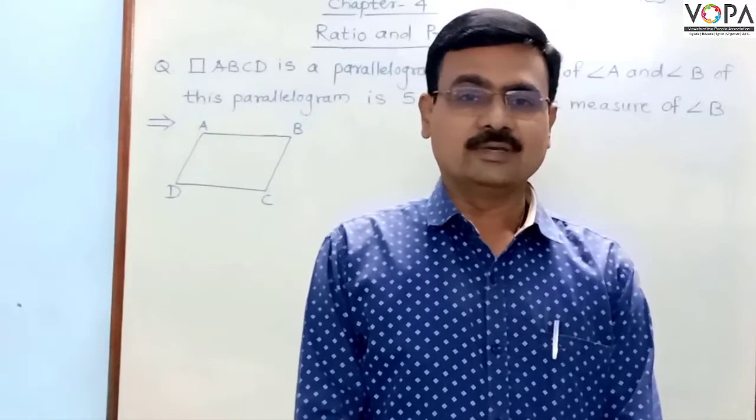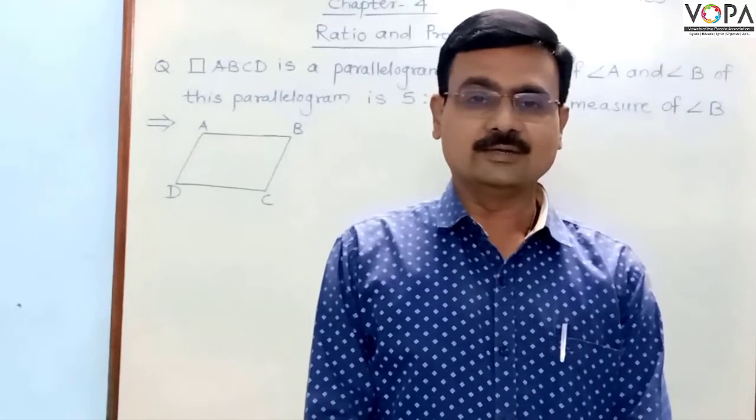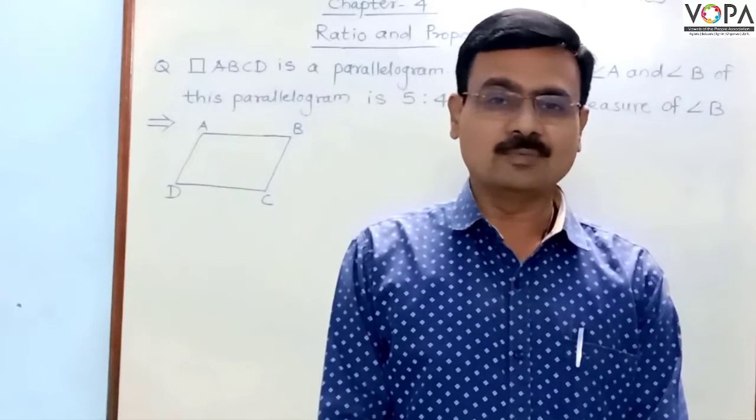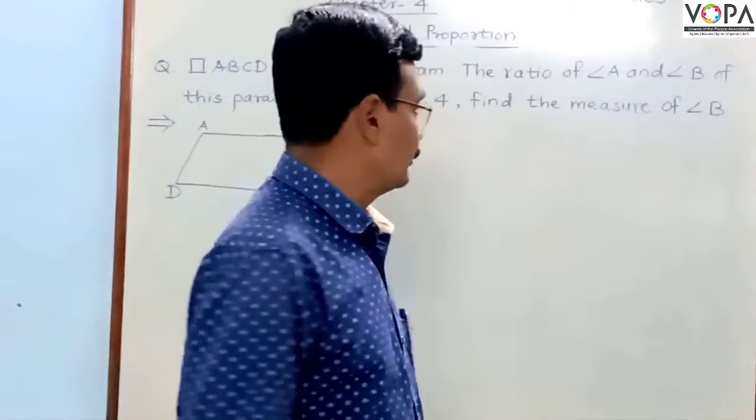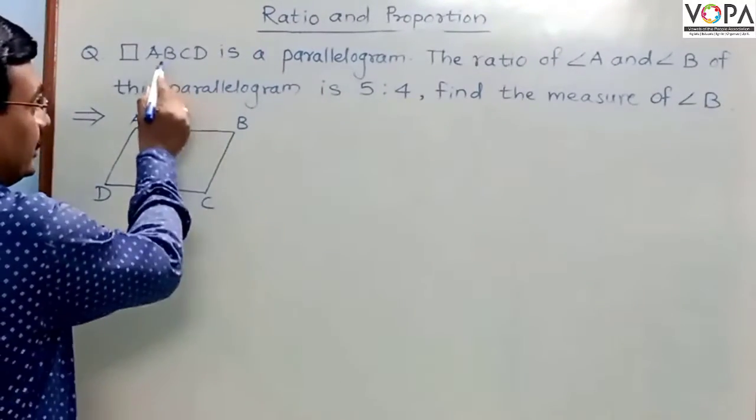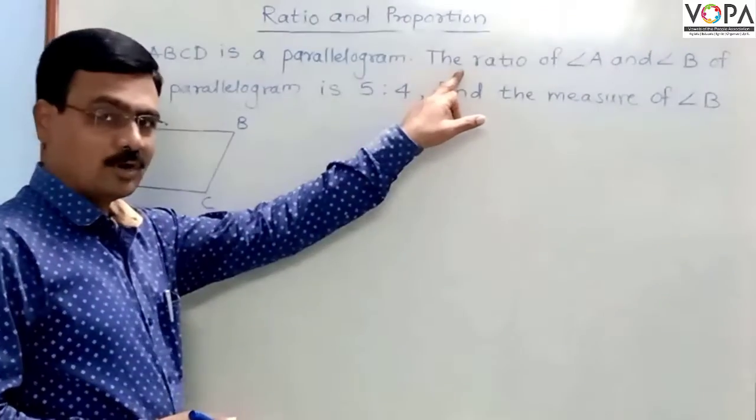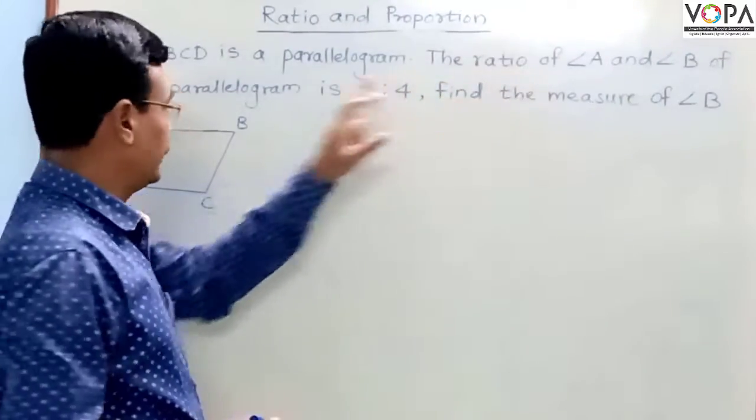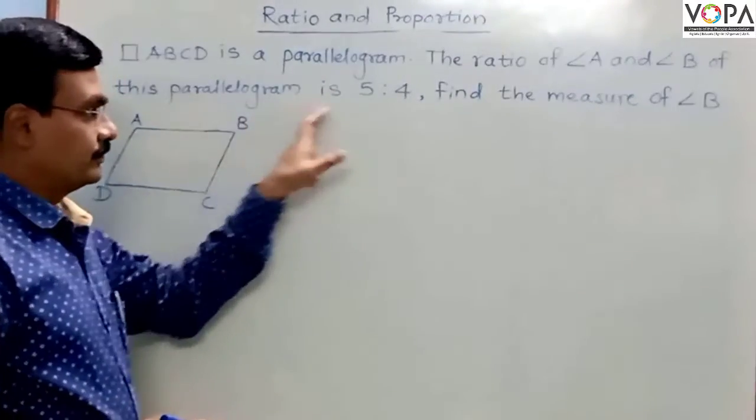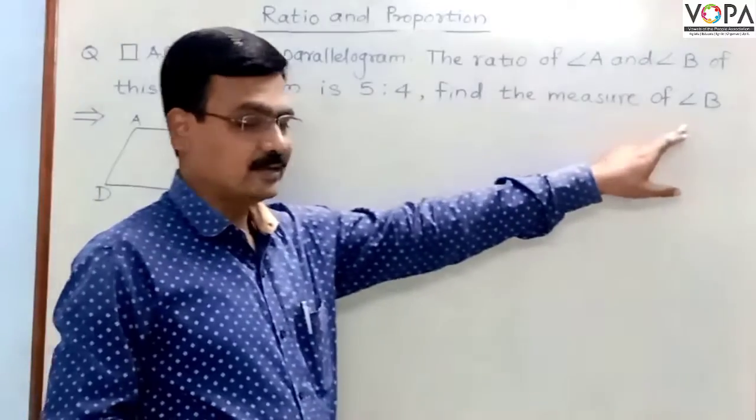Let us talk about examples which are based on ratio and word problems. The first word problem is: ABCD is a parallelogram. The ratio of angle A and angle B of this parallelogram is 5 to 4. Find the measure of angle B.